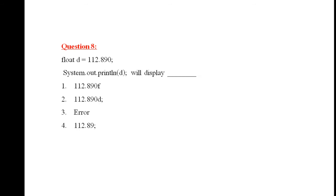Question 8: float d = 112.890; System.out.println(d). The right answer is that it will display an error. This is because you are trying to store a double value in a float variable, so you will get the error: loss of precision.